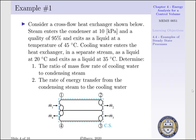Steam enters at state 1 at 10 kPa with a quality of 95%, and it exits at state 2 as a liquid at 45 degrees centigrade. Cooling water enters at state 3 as a liquid at 20 degrees centigrade, and exits at state 4 as a liquid at 35 degrees centigrade. We want to determine the ratio of mass flow rate of cooling water to condensing steam — that is M.3 per M.1 — and the rate of energy transfer from the condensing steam to the cooling water.